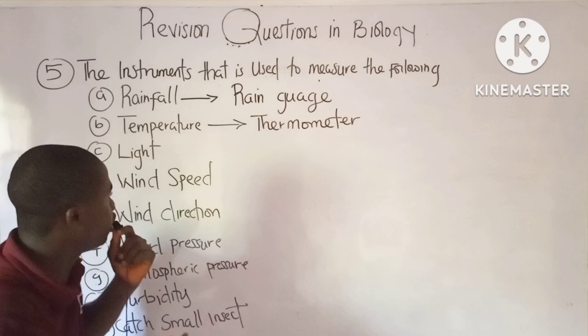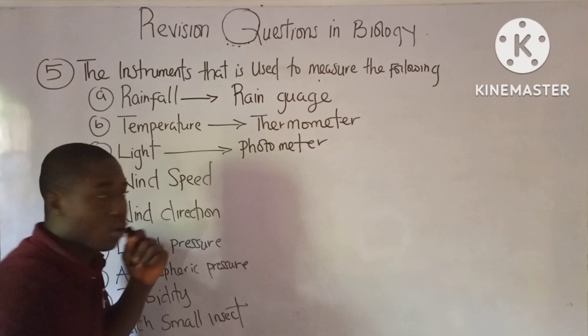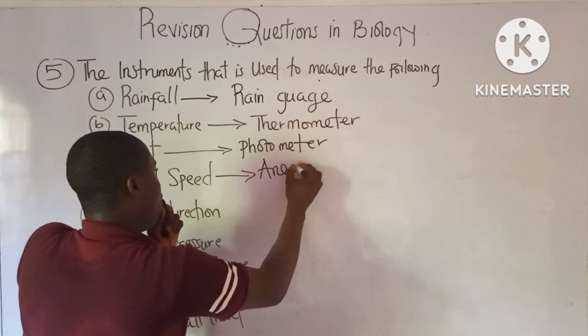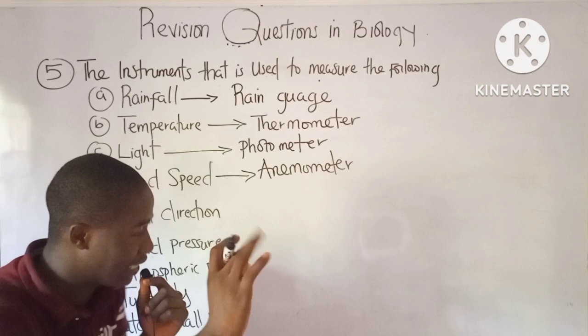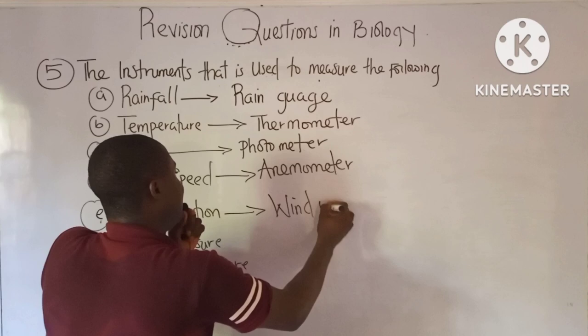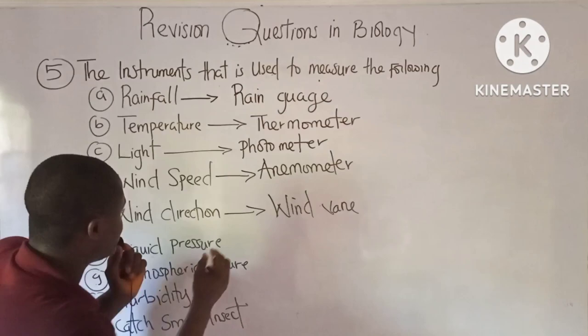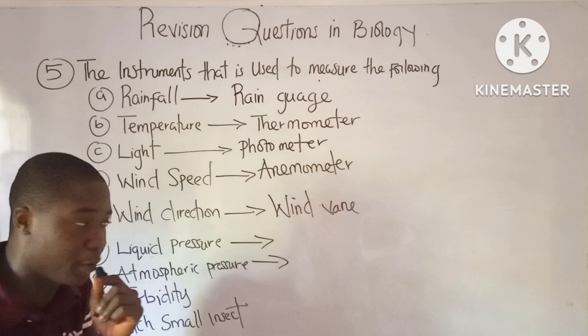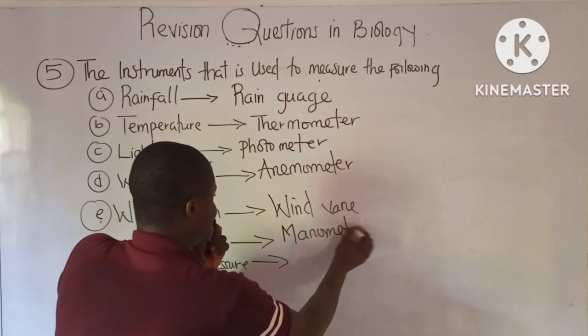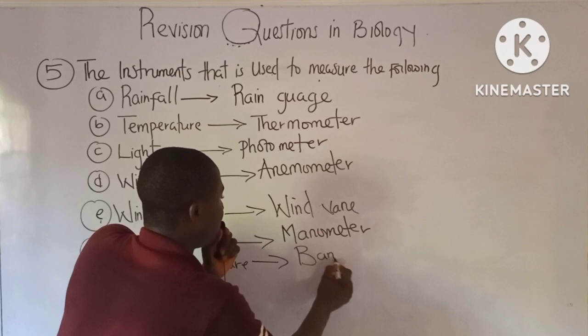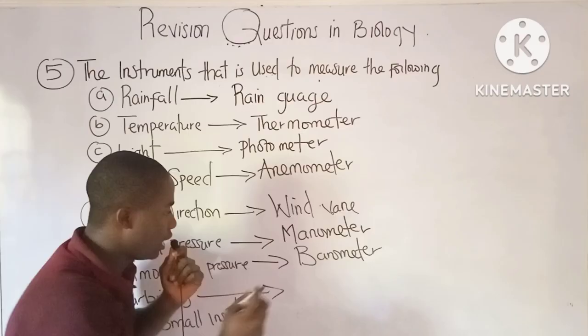Light is measured by the photometer. Wind speed is measured by the anemometer, while wind direction is measured by the wind vane. Liquid pressure is measured by the manometer, and atmospheric pressure is measured by the barometer. Turbidity is measured by the Secchi disc.